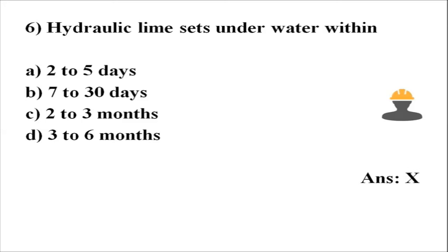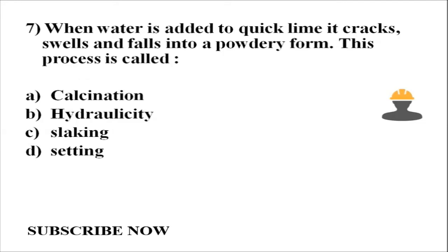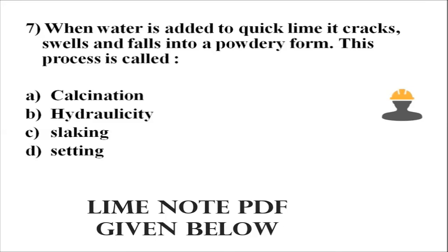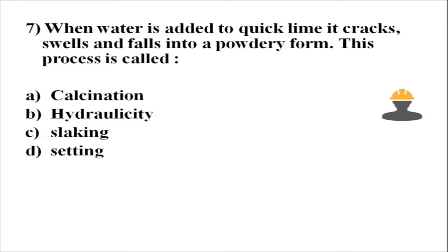When water is added to quick lime, it cracks, swells, and falls into a powder. This process is called — Option A, calcination; Option B, hydrolicity; Option C, slaking; Option D, setting. The answer is Option C, slaking. When quick lime turns to powder form, we call it slaked lime.